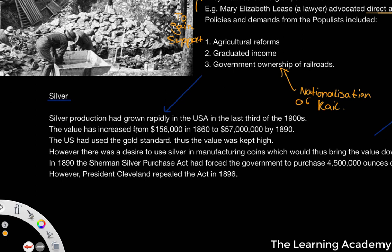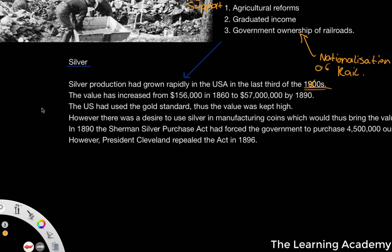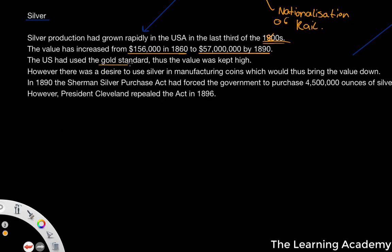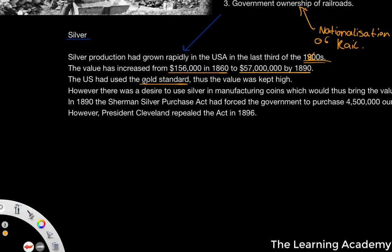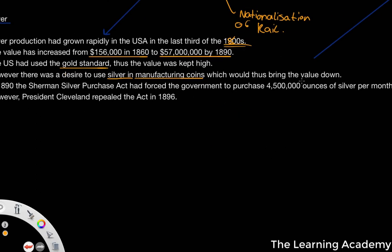When it comes to silver, the production of silver had grown rapidly in the last third of the 1800s. The value increased from $156,000 in 1860 to $57 million by 1890 — a huge significant increase in a very short period of time. The US used the gold standard, and therefore the value was kept high. The gold standard is measuring the value of something using a single standard, and they used gold — you would work out the value of something relative to its gold standard. However, some people did see a desire to use silver in manufacturing coins, which would bring the value down.